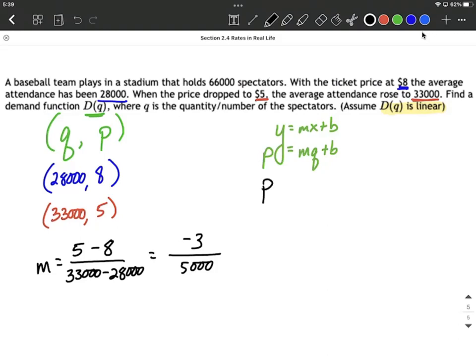Now our function can look like P equals negative 3 over 5,000 times Q plus B. Now we're almost there, but we don't know B just yet. So in order to find B, I think it's going to be important that we go ahead and we could either use the point slope form or the slope intercept. I'm going to choose to just use the format we're already in, the slope intercept form.